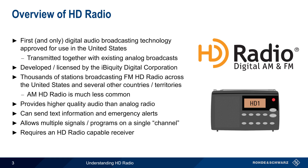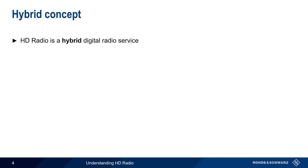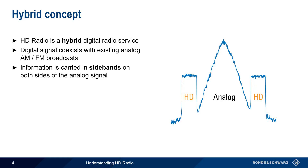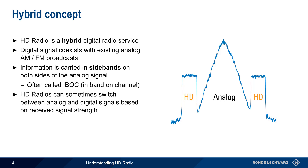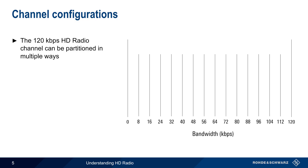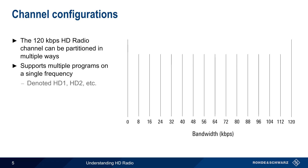It should be mentioned that receiving HD radio signals does require an HD radio receiver. Traditional analog receivers will only be able to receive the analog portion of the combined signal. HD radio is sometimes referred to as a hybrid digital radio service because the HD signal coexists or occupies the same channel as existing analog AM and FM broadcasts. This digital signal is carried in the form of sidebands on both sides of the analog signal, and this methodology is often referred to as IBOC, or in-band on-channel. Many HD radios can switch between the analog and digital signals depending on the received signal strength. The digital HD radio channel can be partitioned in various ways to provide multiple programs on a single frequency. These channels are denoted as HD1, HD2, HD3, and HD4.